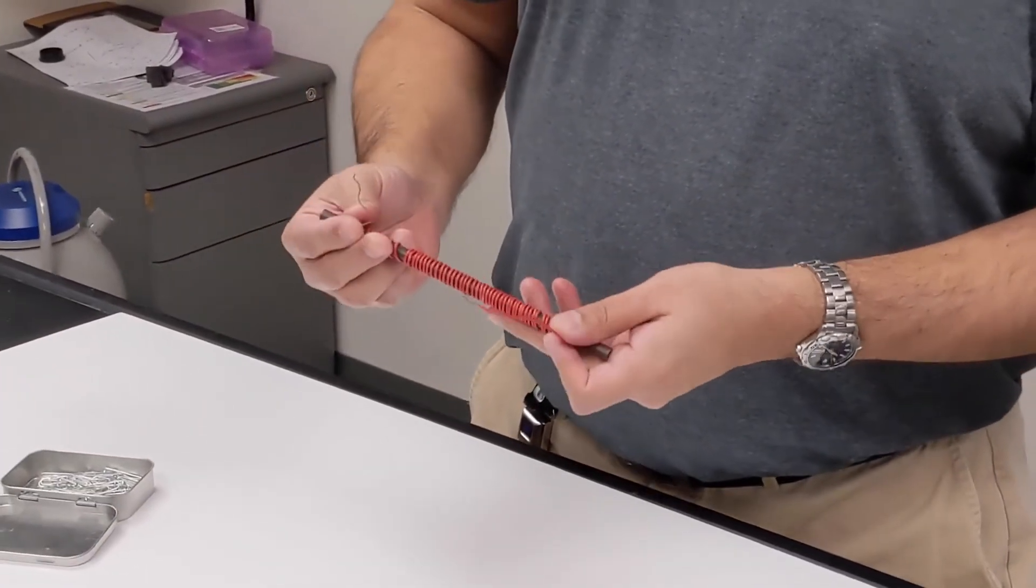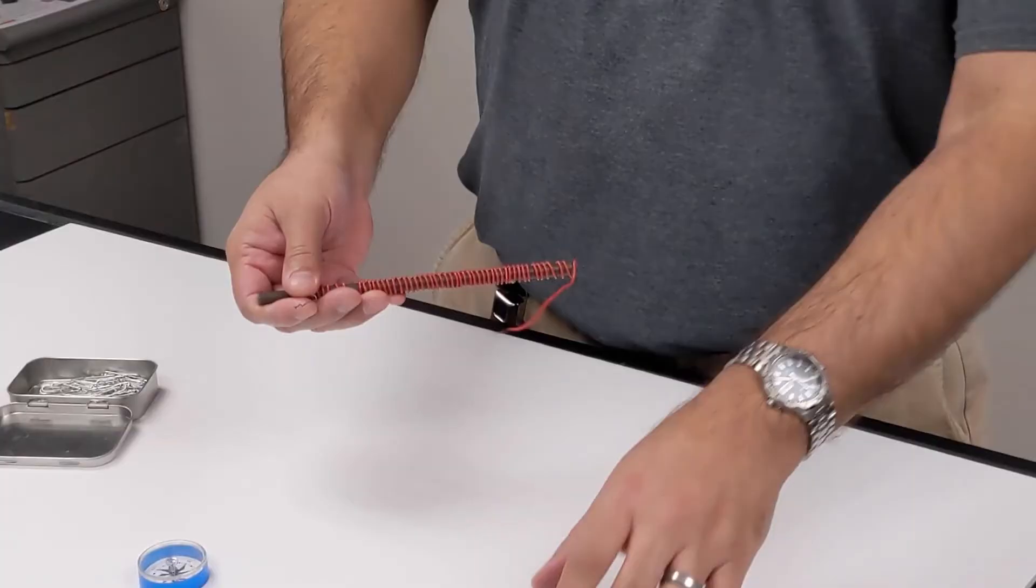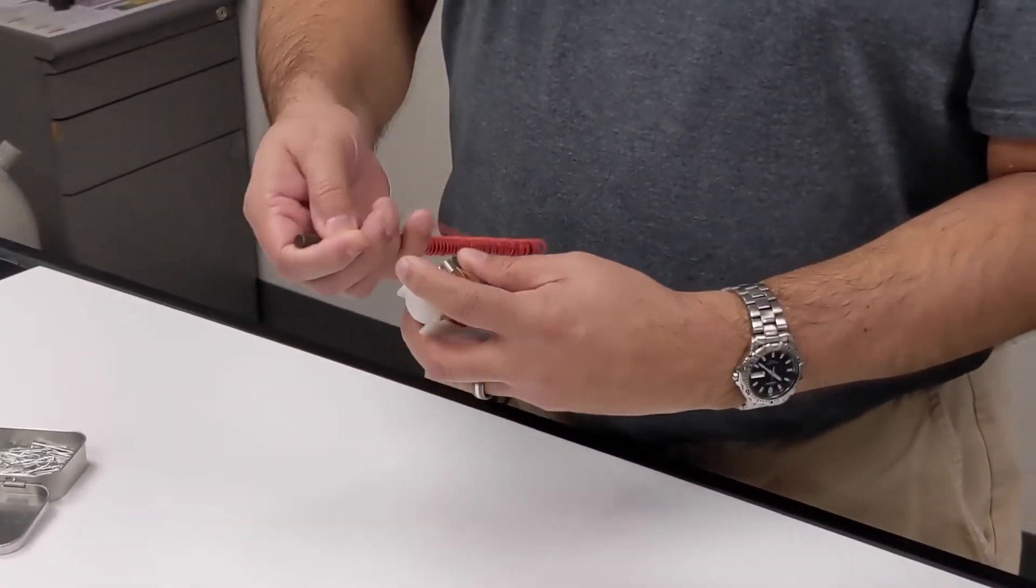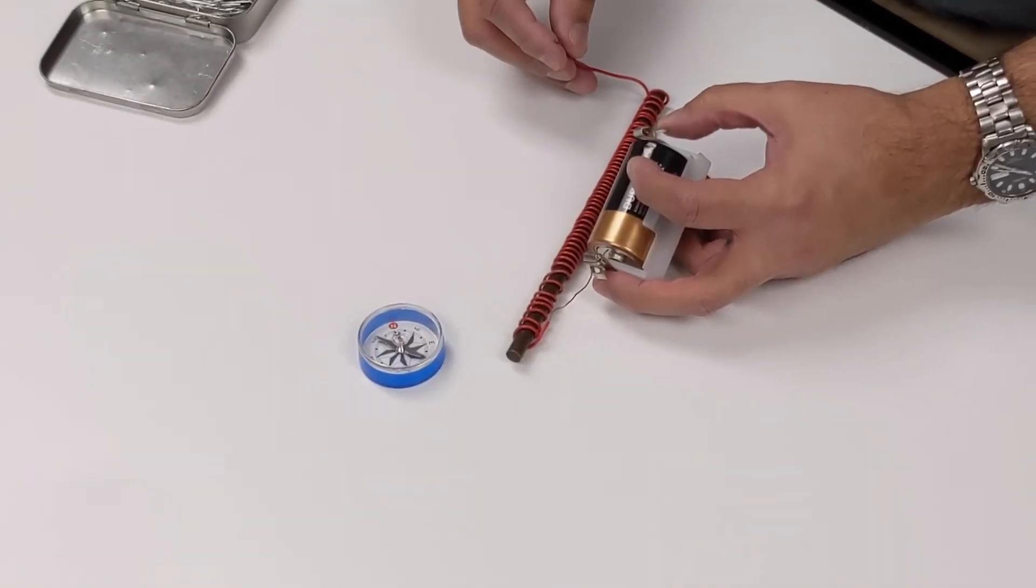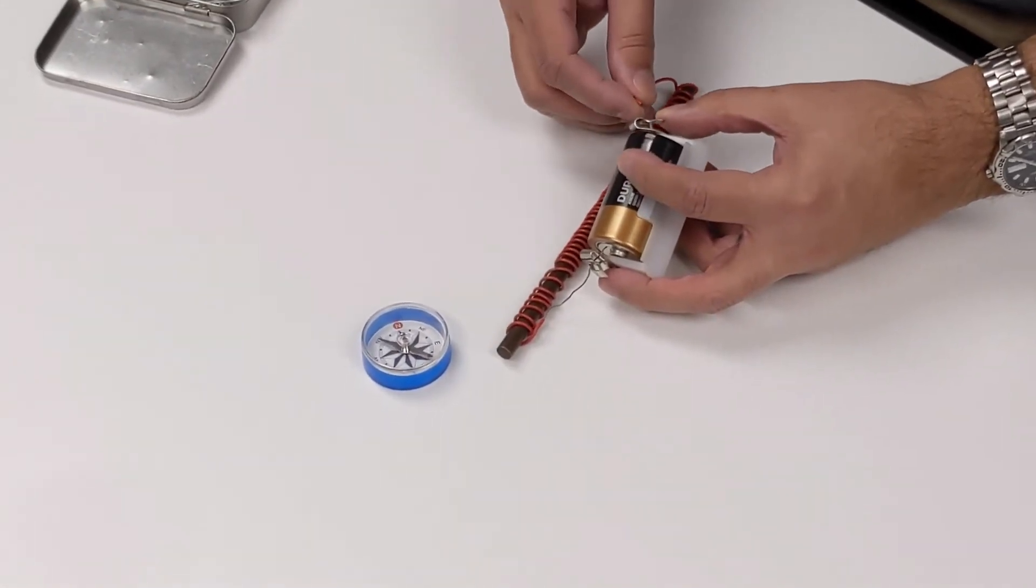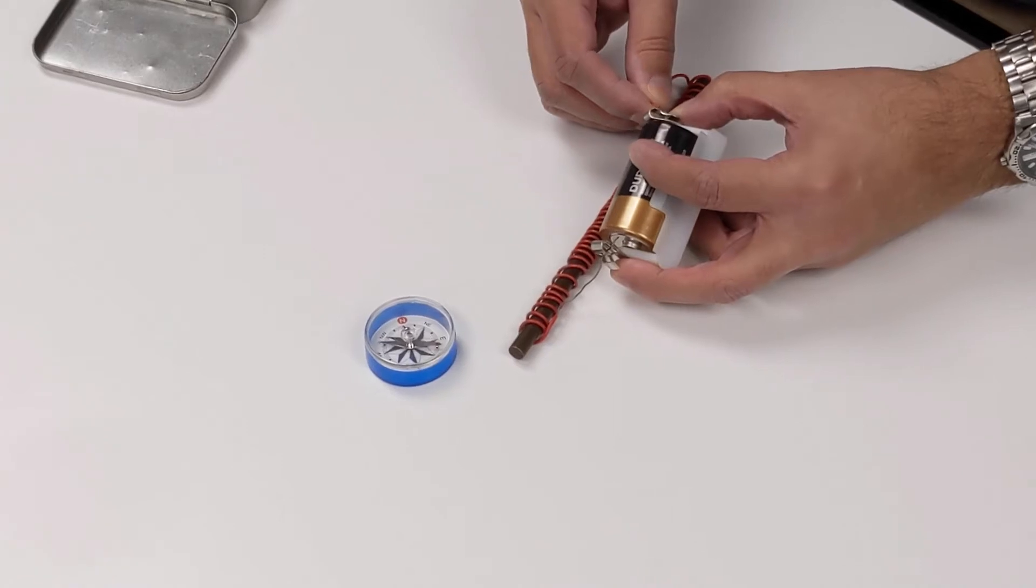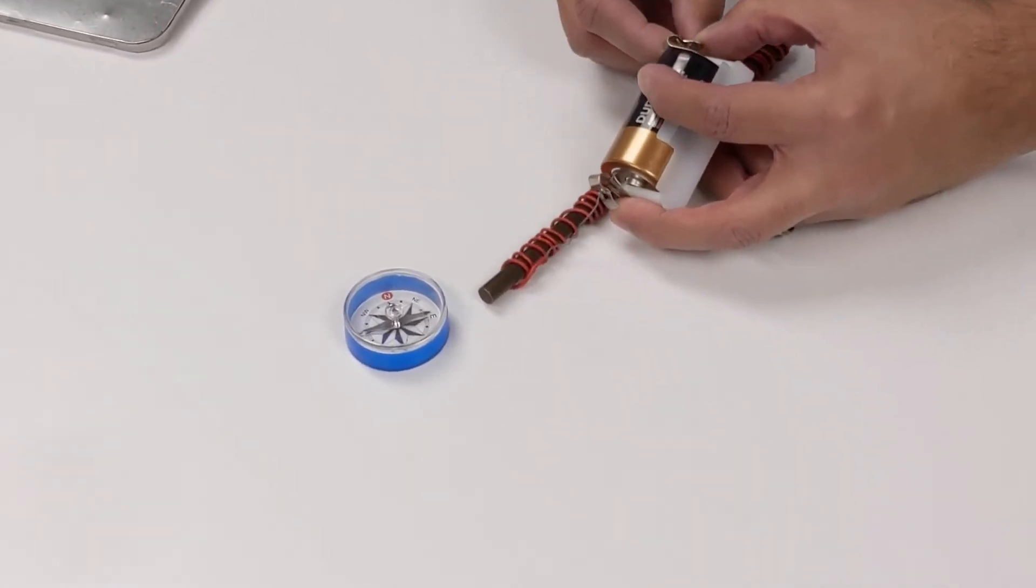Now, of course, we can't have an electromagnet without electricity, so I need to close this circuit by connecting my wire to the battery. If you look at the compass, as soon as I connect this to close the circuit, you're going to see the compass will react to the magnetic field that's being created.